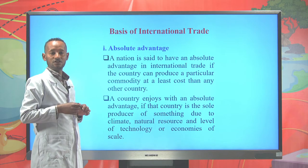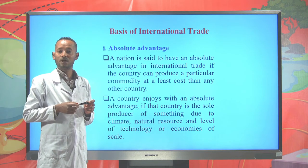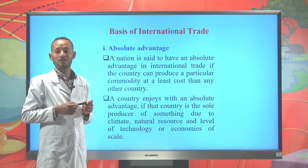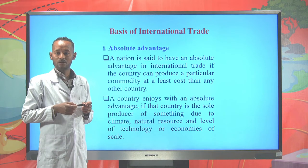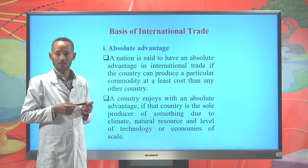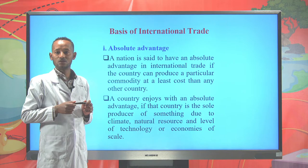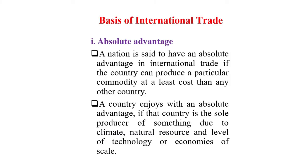There are two bases of international trade: absolute advantage and comparative advantage. A nation is said to have an absolute advantage in production of a particular commodity if that country can produce the product at the least cost than any other country. Remember, producing a product in large quantity is not a guarantee for absolute advantage. For example, Americans have the capital but cannot produce coffee because it requires a higher cost of production.